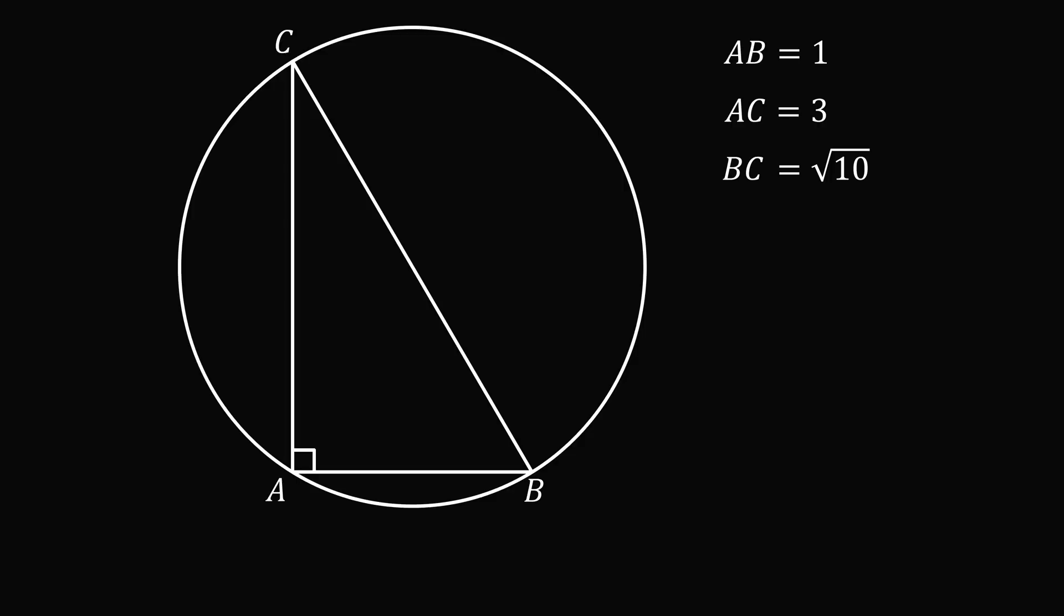We now want to construct the circumcircle of ABC. Now because angle A is a right angle, the arc that it subtends in the circumcircle will be 180 degrees. This means that BC will be the diameter of the circumcircle.